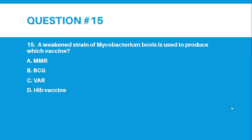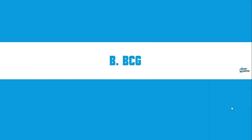Number 15. A weakened strain of Mycobacterium bovis is used to produce which vaccine? Letter A, MMR. Letter B, BCG. Letter C, Varivax. Letter D, HIV vaccine. And the correct answer for number 15 is letter B, BCG.